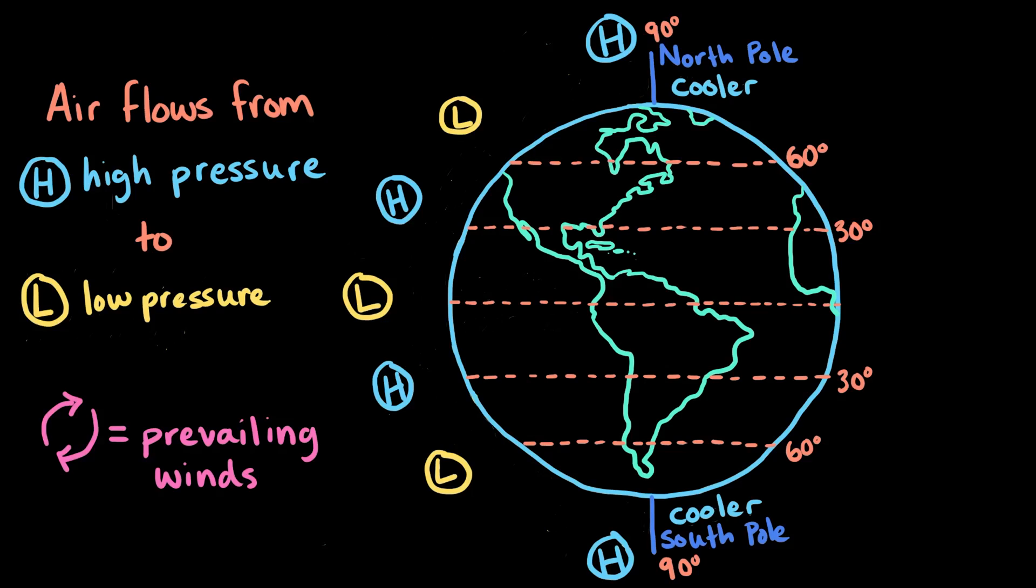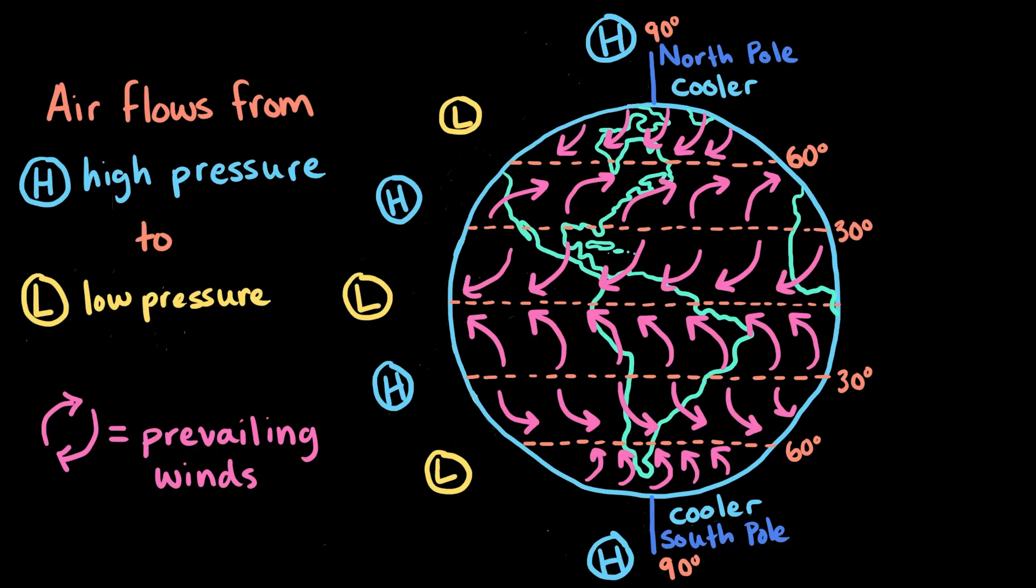But the global wind patterns, which we call prevailing winds, look like they curve to the right in the northern hemisphere and to the left in the southern hemisphere. This curving has to do with the rotation of Earth and is called the Coriolis effect.